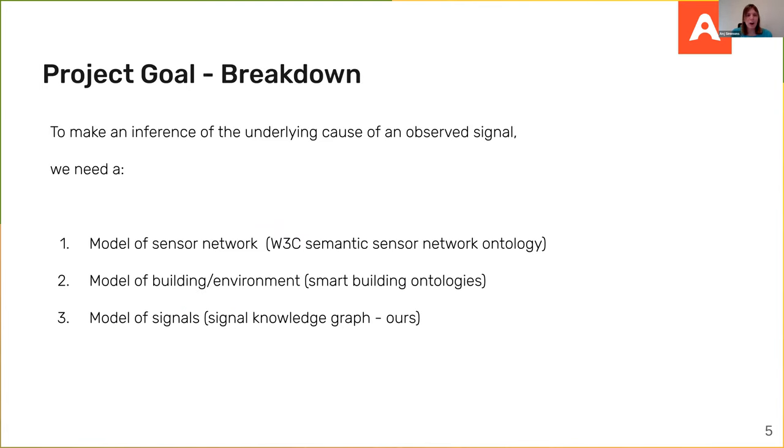So breaking down that goal, to be able to infer the underlying cause of observed signals, we need three things. Firstly, we need some sort of model of sensor network, and I'm going to talk a little bit about existing standards for that. We need some sort of model of the building that those sensors are observing. And finally, what I'm going to try and convince you of today is we also need some sort of model of the signals. It's not enough to just know what the sensors are and where they're located. We also need to understand something about what signals those sensors are listening for, and what could possibly cause those signals.